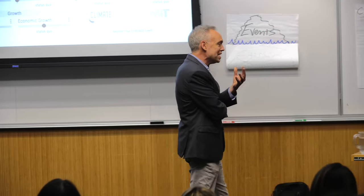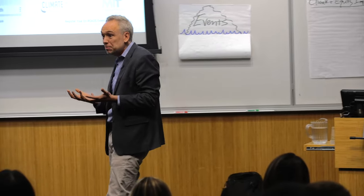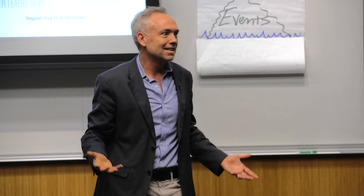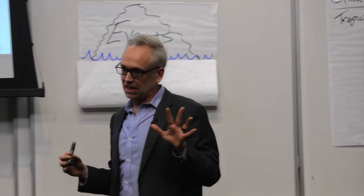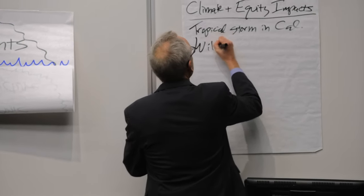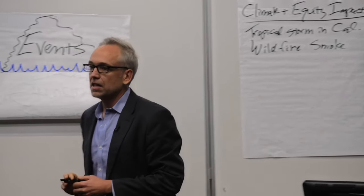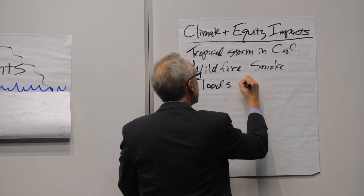Why do we do this? I want to get away from models and get back to what matters to us as human beings. What a summer for climate — a tropical storm in California. Wildfire smoke. Wildfires up in California, up in Canada, all over. Floods in Pakistan — a third of Pakistan underwater. Heat waves in India.